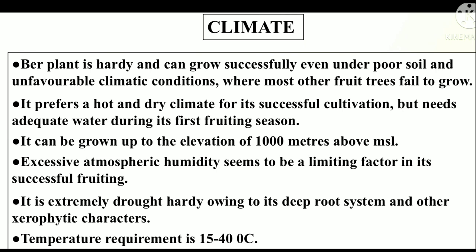Let's discuss about climatic conditions of Ber plant. Ber plant is hardy and can grow successfully even under poor soil and unfavorable climatic conditions where most other fruit trees fail to grow. It prefers a hot and dry climate for its successful cultivation, but needs adequate water during its first fruiting season. It can be grown up to an elevation of 1000 m above MSL. Excessive atmospheric humidity seems to be a limiting factor in its successful fruiting. It is extremely drought hardy owing to its deep root system and other xerophytic characters. Temperature requirement is 15 to 40 degrees Celsius.